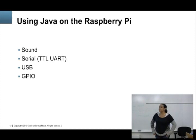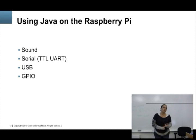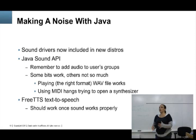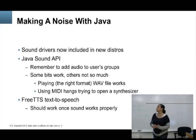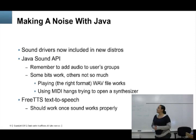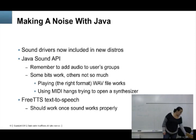Using Java on the Raspberry Pi — this is the sort of testing we did in the team, one demo per area. We tested sound, serial/USB connectivity, and GPIO pins. Making noises was frustrating — it worked at one point, but we don't know what we changed that broke it. We were able to play WAV files, but MIDI files kept hanging every time we opened the synthesizer. Once you have the sound API working, you can use FreeTTS for text-to-speech applications. We just need to revisit it.